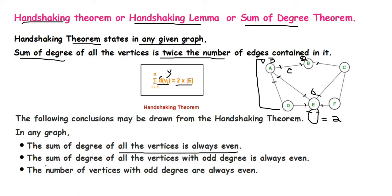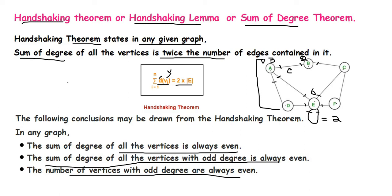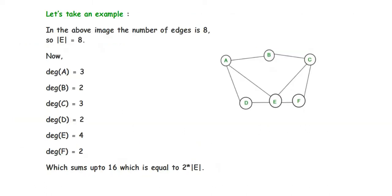The sum of degrees of all vertices with even degrees is always even. The number of vertices with odd degree is always even. For example, if vertex A has an odd degree, the number of such odd-degree vertices in the graph is always an even count, such as two vertices. So the number of vertices with odd degree is always even.